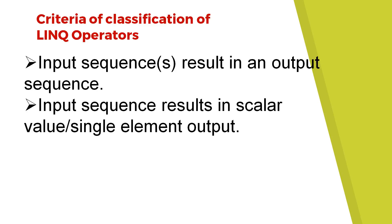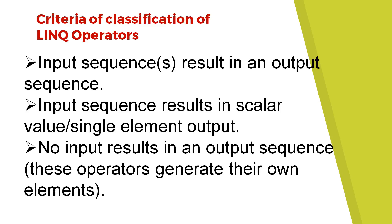The second category is: input sequence results in a scalar value or single element output. For example, if you want to count all records of a database table, you use the Count function, which returns a scalar output. The third category is: no input results in an output sequence. For example, if you want to create a series of integers, you can use such LINQ operators.